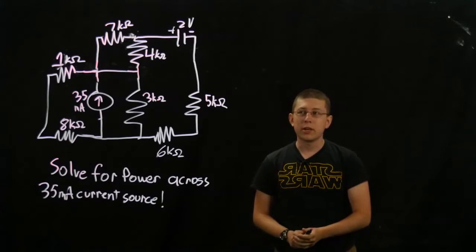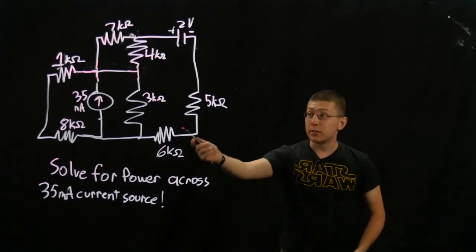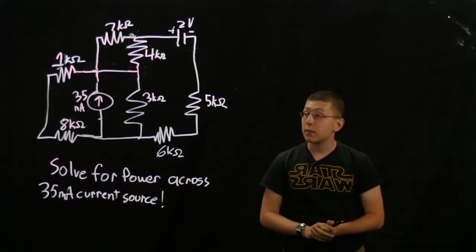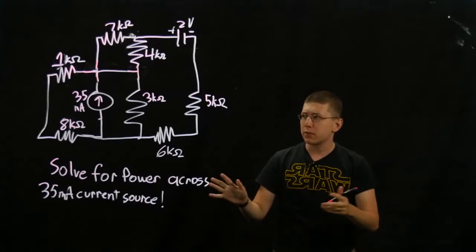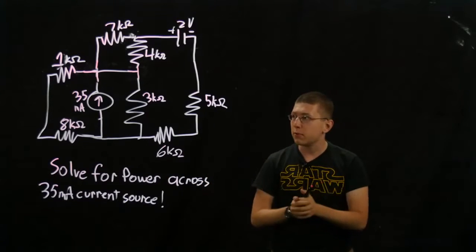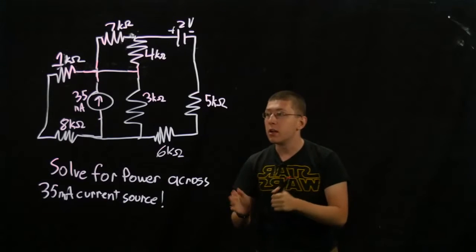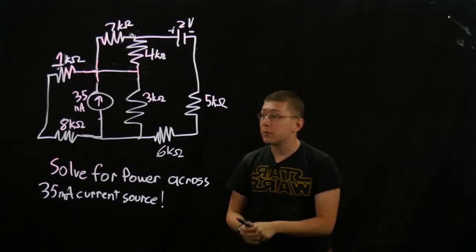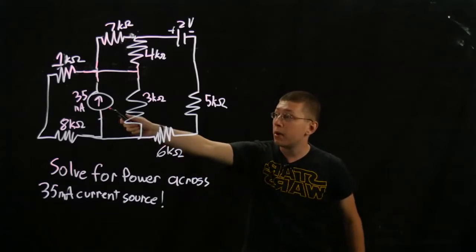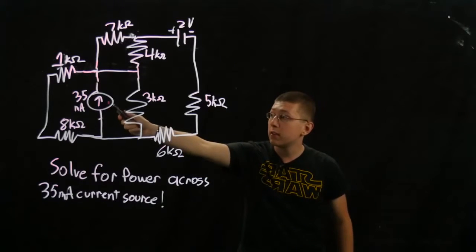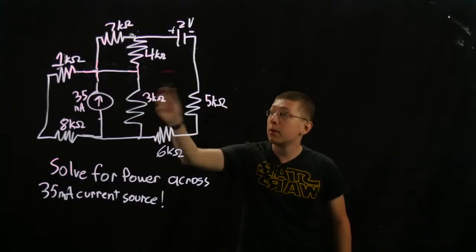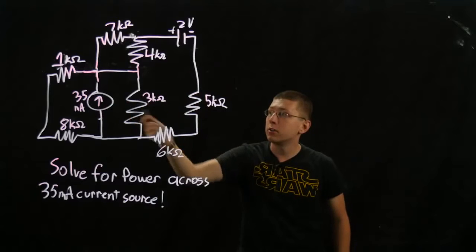Hi folks, I'm Dan from HKN and we're going to be solving this complex circuit — just a simple node voltage problem when you get down to it. We're going to be solving it for the power across this 35 milliamp current source.